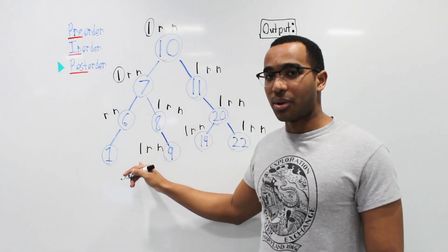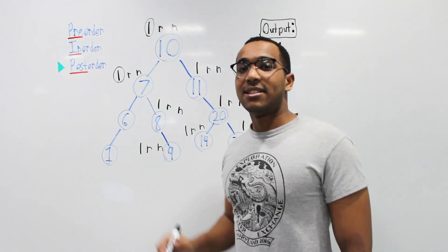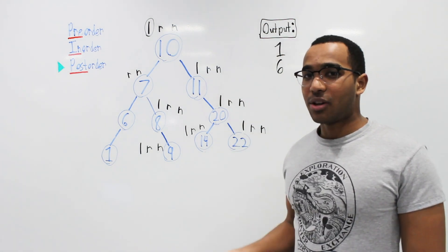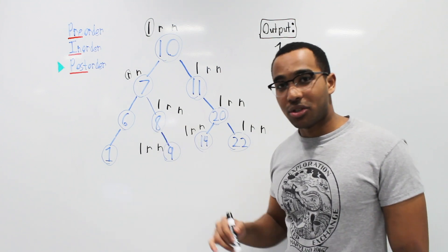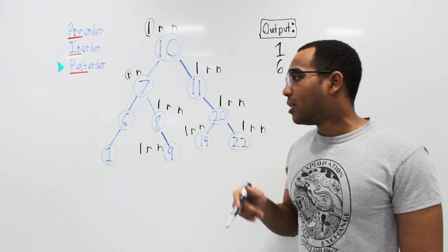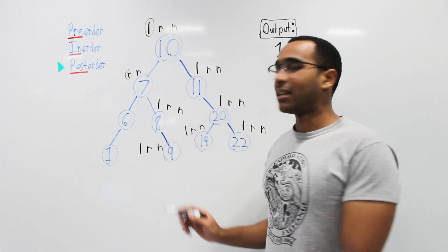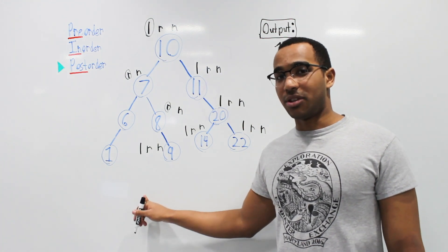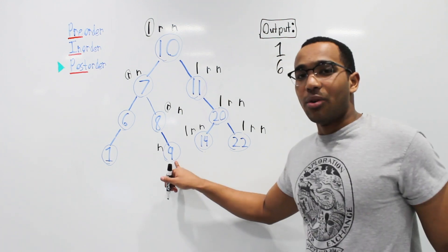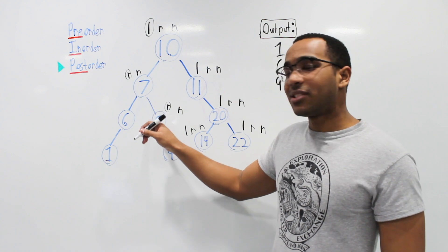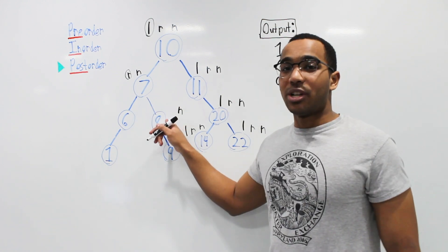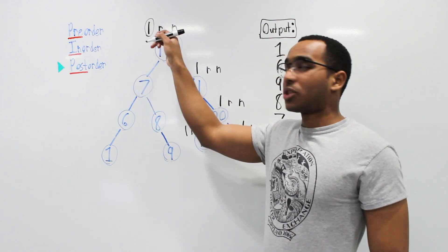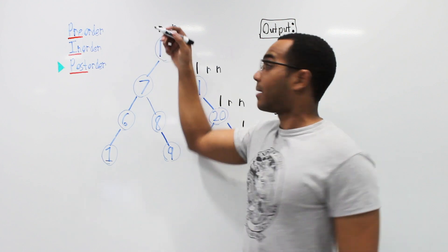6 goes right — nothing, then prints 6. Returns to 7. 7 goes right to 8. 8 goes left — nothing, goes right to 9. 9 goes left — nothing, right — nothing, then prints 9. Returns to 8. 8 now prints itself. Returns to 7. 7 now prints itself. Returns to 10. 10 has finished its left subtree, so it goes right.